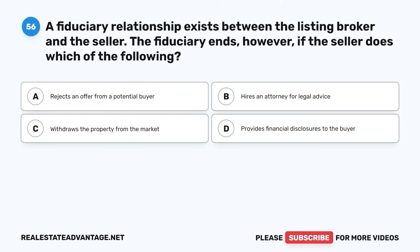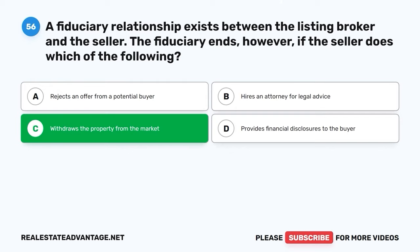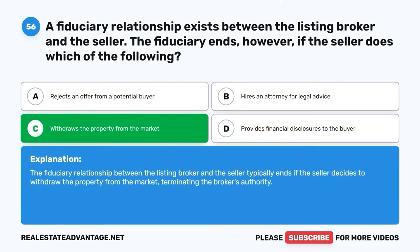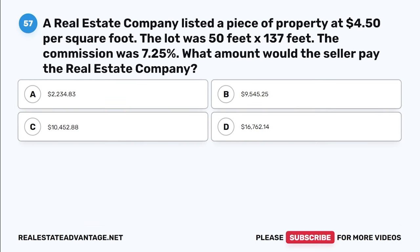Question 56. A fiduciary relationship exists between the listing broker and the seller. The fiduciary ends if the seller does which of the following? A. Rejects an offer from a potential buyer. B. Hires an attorney for legal advice. C. Withdraws the property from the market. D. Provides financial disclosures to the buyer. The correct answer is C: Withdraws the property from the market. The fiduciary relationship between the listing broker and the seller typically ends if the seller decides to withdraw the property from the market, terminating the broker's authority.